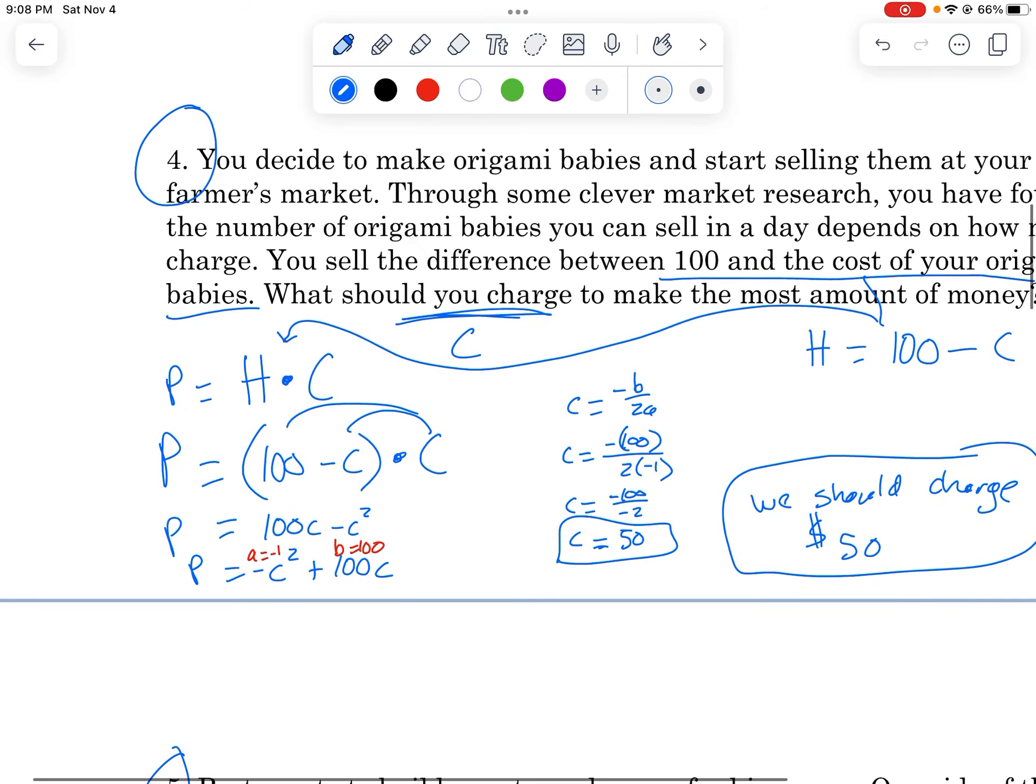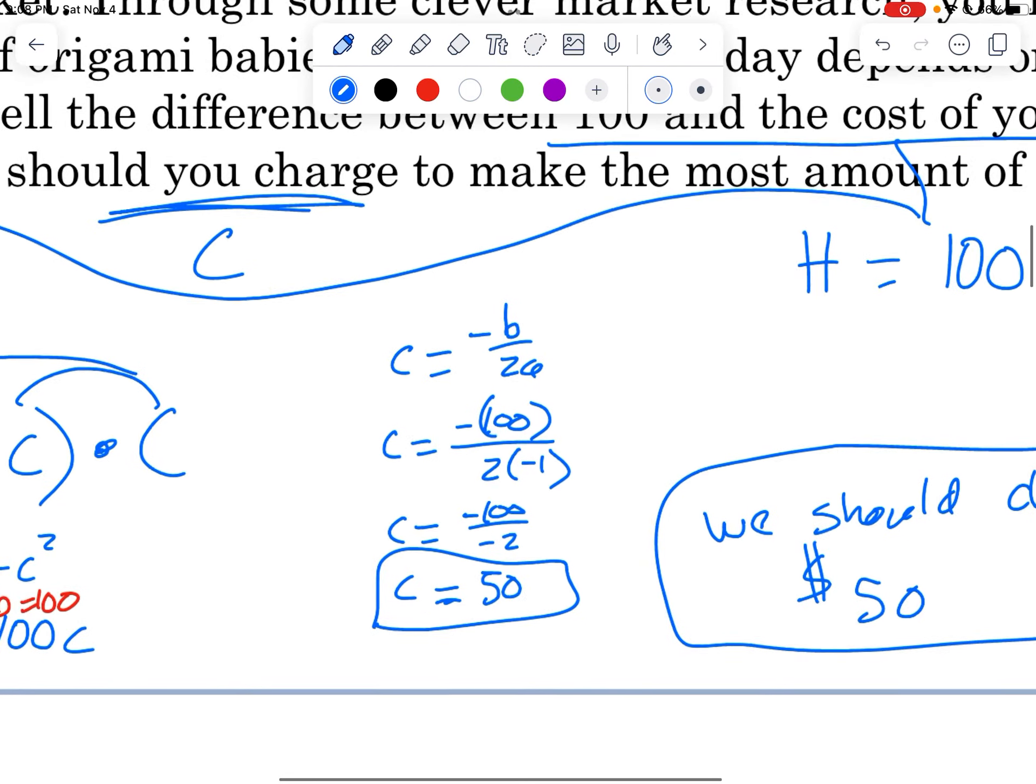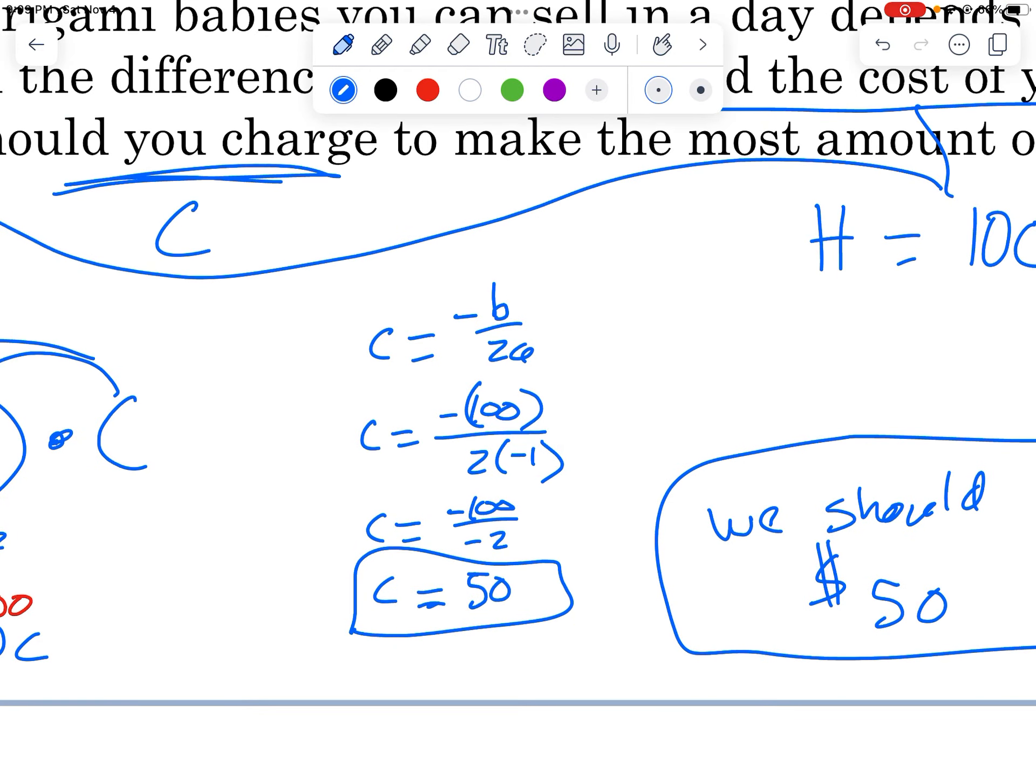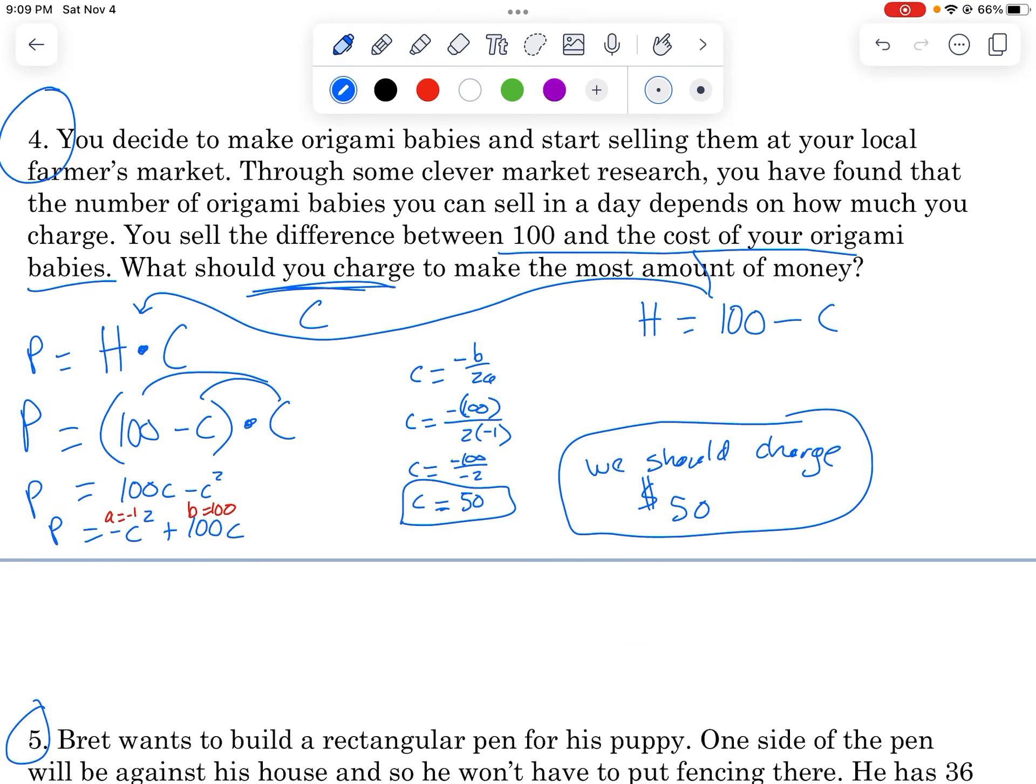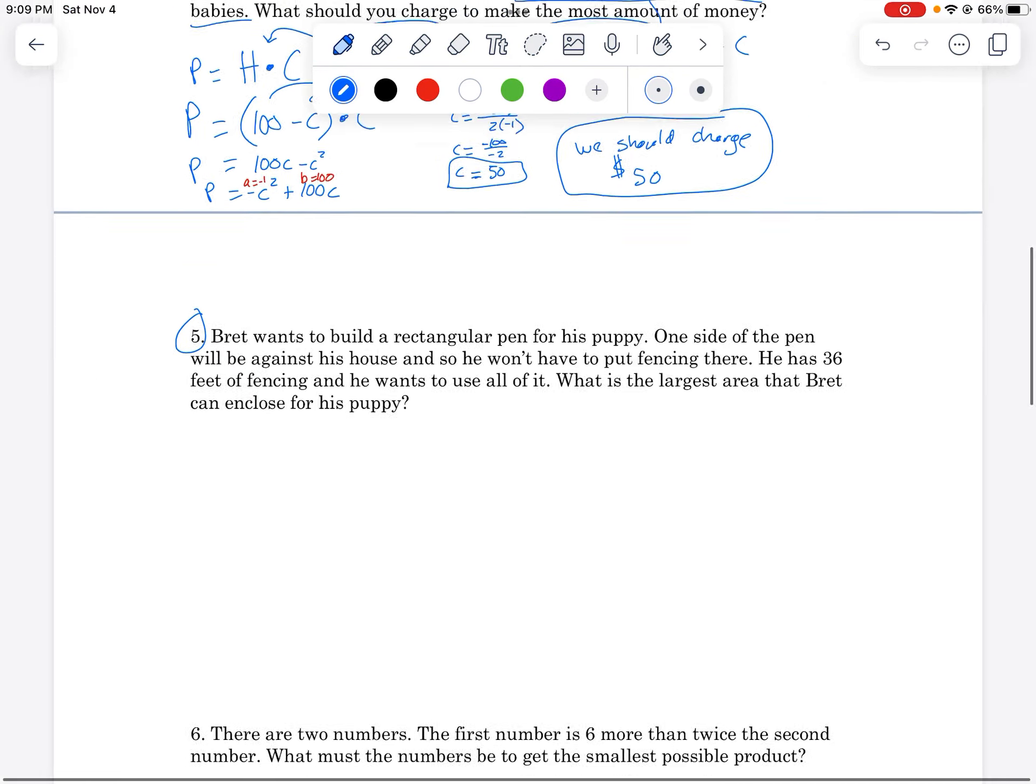So there you go. So that's kind of the process. Write your equation out, turn it into standard form, and then use that x equals negative B over 2A. In this case, C equals negative B over 2A. And you can get your maximum that way. So let's jump to another example. Let's use five.